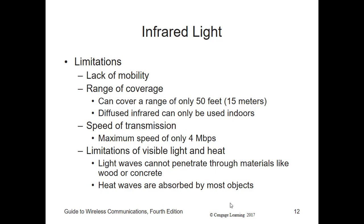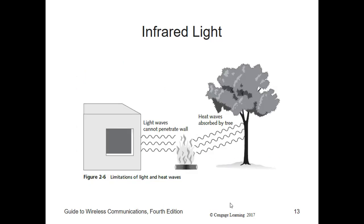Infrared also shares the limitations of visible light and heat. Light waves cannot penetrate most materials like wood or concrete, and heat rays are absorbed by most objects including human skin. Solid opaque objects, and even dust, humidity, and water molecules in the atmosphere, can limit the distance infrared waves travel. Because of these limitations, infrared wireless systems are generally used in specialized applications such as data transfers between a laptop computer, digital camera, handheld data collection devices, and similar devices.